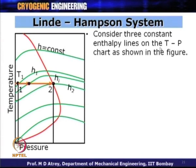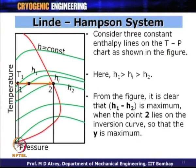From the figure it is clear that H_1 − H_2 is maximum when point 2 lies on the inversion curve, so that Y is maximum. The conclusion is that in order to maximize the liquid yield Y, the compression endpoint — point 2 — must lie on the inversion curve at the compression temperature.